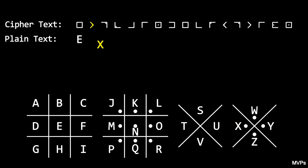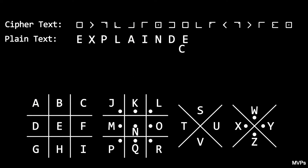The right-pointing diagonal lines with a dot are in the second X and contain an X. The two straight lines with a dot in the upper right corner enclose the letter P. The two straight lines with a dot in the lower left corner enclose the L. We can continue this process character by character in the ciphertext to recover the plaintext. In this case, the plaintext was the phrase 'explain decryption.'